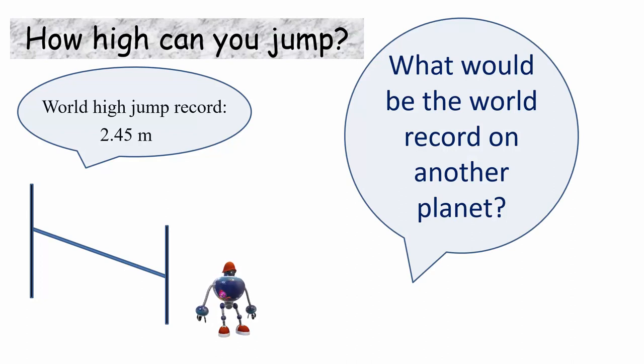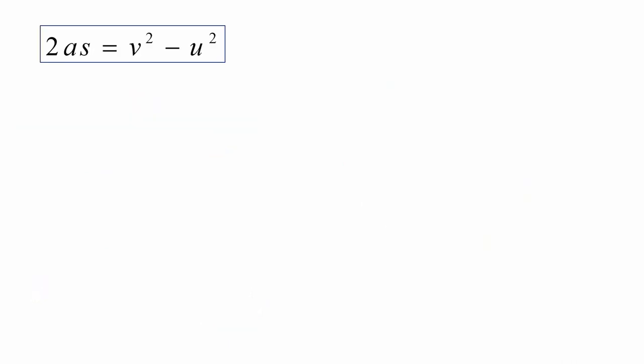What do you reckon the equivalent high jump record might be on another planet? Again, we come to our favorite formula of kinematics. 2As equals V squared minus U squared. Let's make some substitutions for the variables. The gravitational acceleration here on Earth is negative 9.8 meters per second squared.